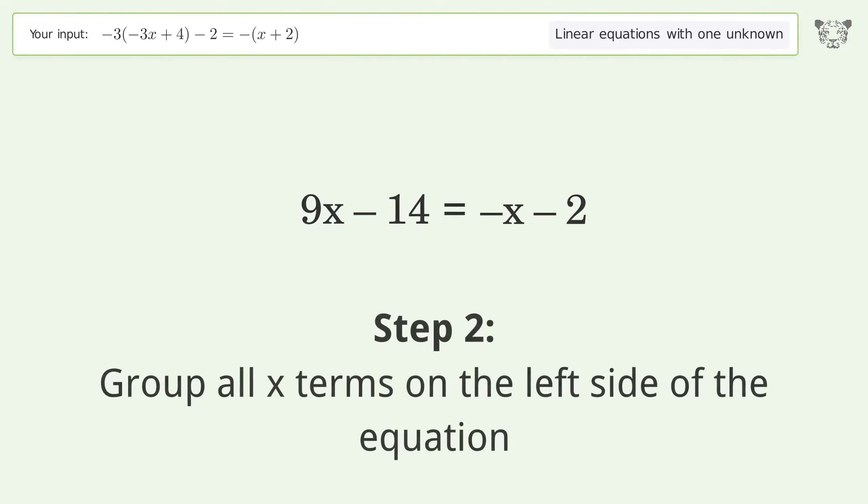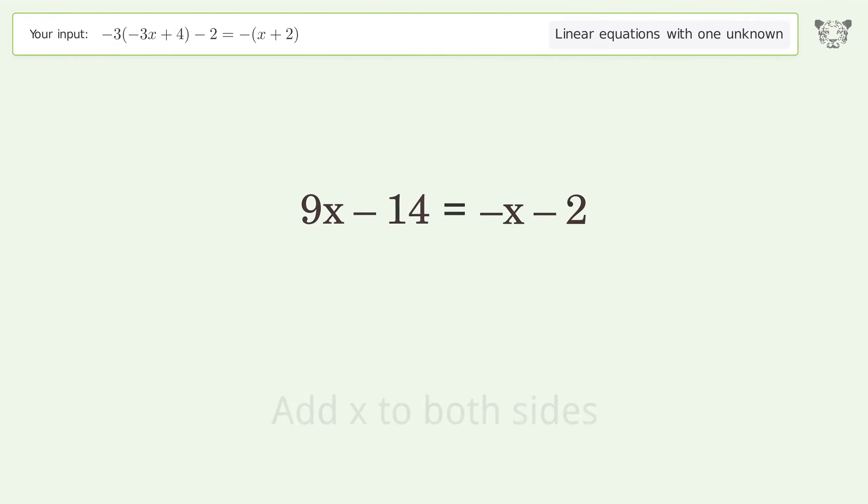Group all x terms on the left side of the equation. Add x to both sides. Group like terms. Simplify the arithmetic. Group like terms. Simplify the arithmetic.